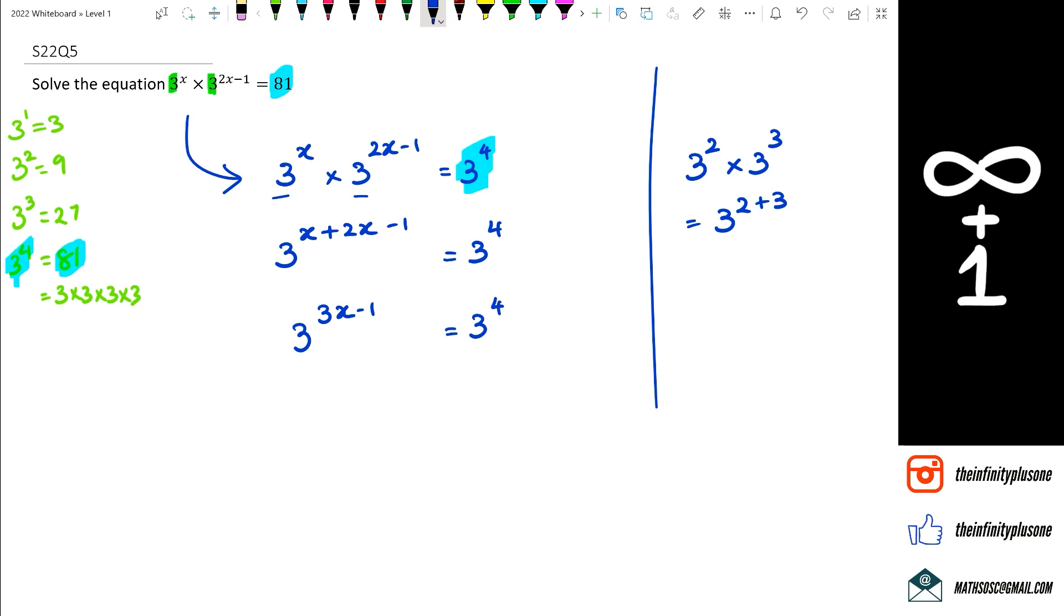Now at this point, what we do know is that both threes are, the bases are the same. So if the bases are the same, then we can say the two powers must equal each other. So think about it like this. If I have 3 to the power of something is equal to 3 to the power of 4, then the only way this is possible is that this box is equal to 4. So that's what's happening here.